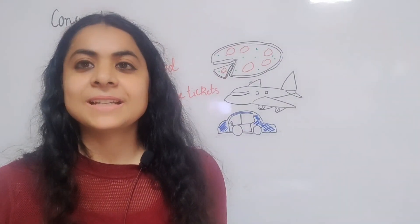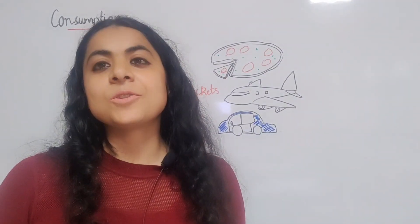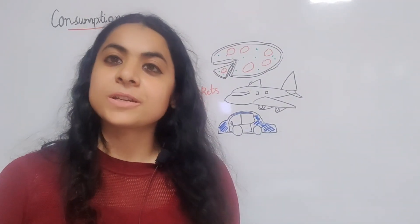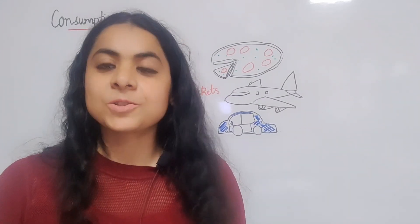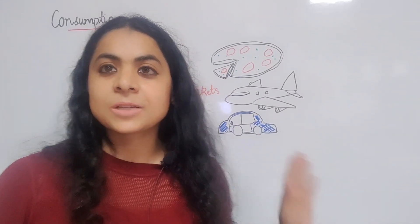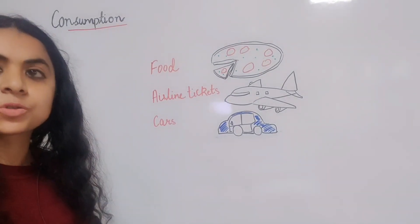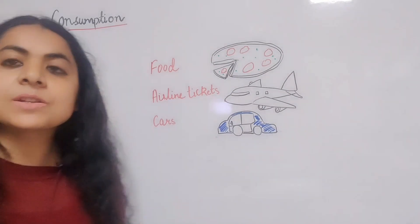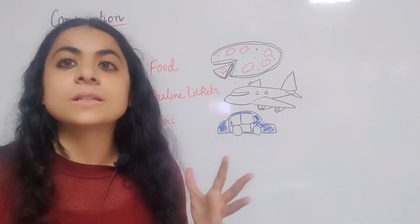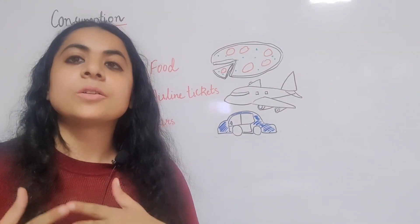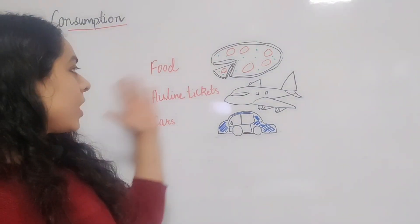Hi everybody, welcome once again. In today's video I will explain the various components of gross domestic product, or GDP. The first component is consumption — these are the goods and services purchased by consumers, ranging from food articles to airline tickets to cars and so on.